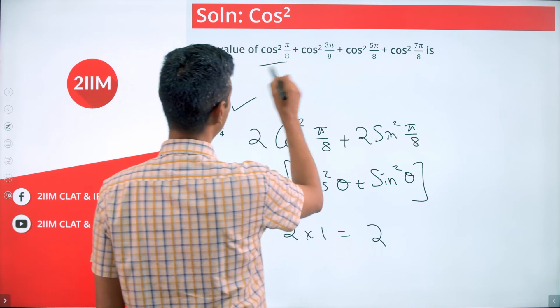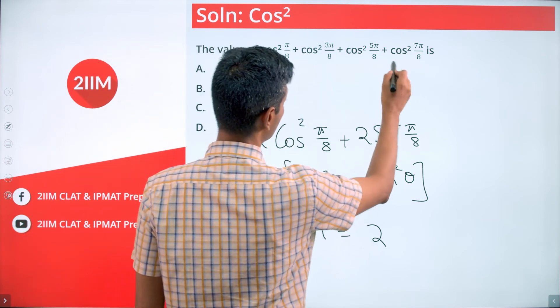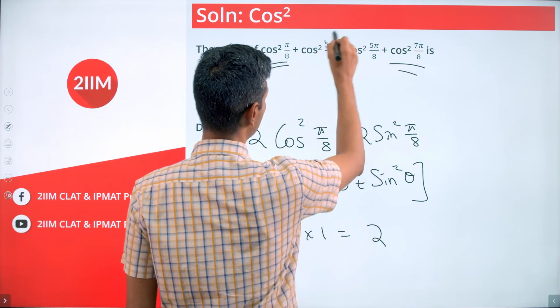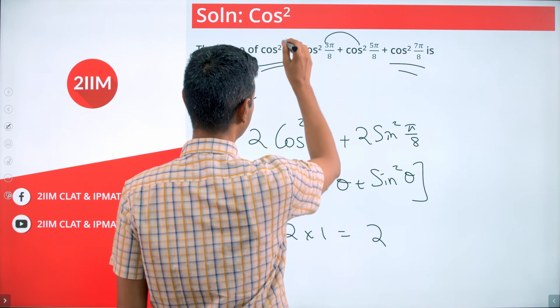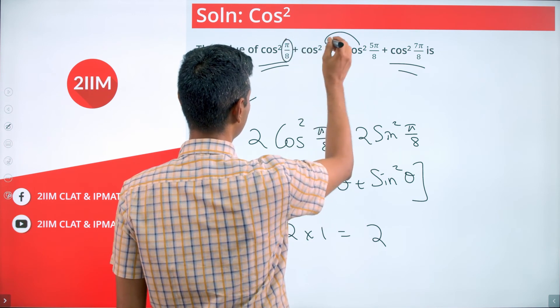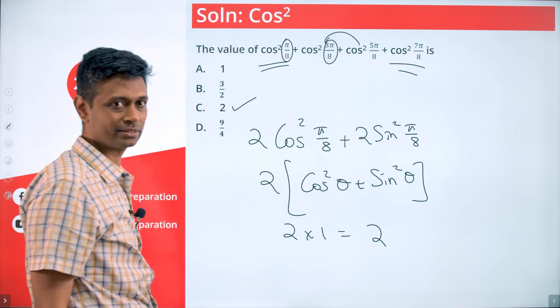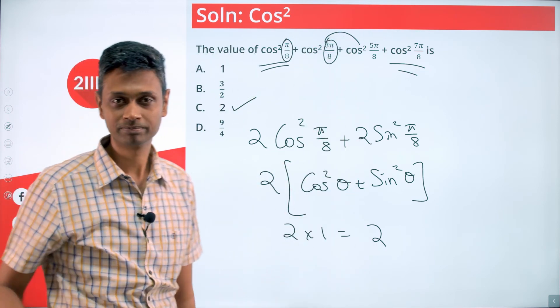To summarize: figure out that these two pairs are equal, figure out that these two are equal, and figure out that each pair of angles adds up to 90° — and you're done.